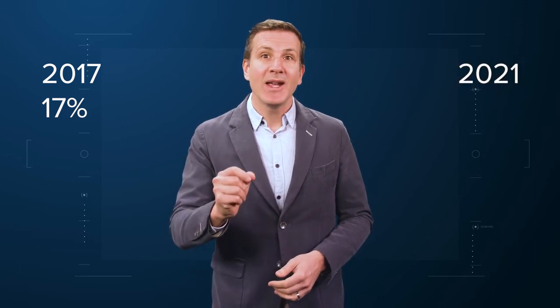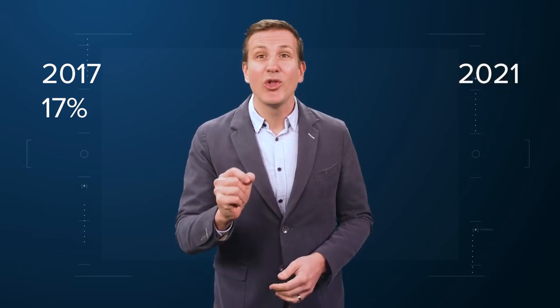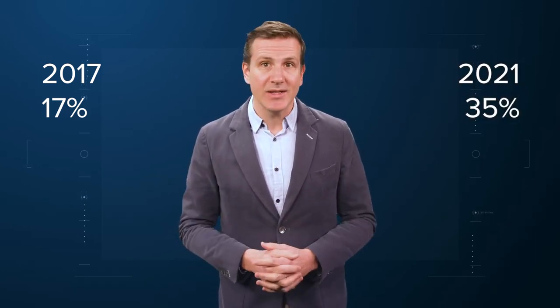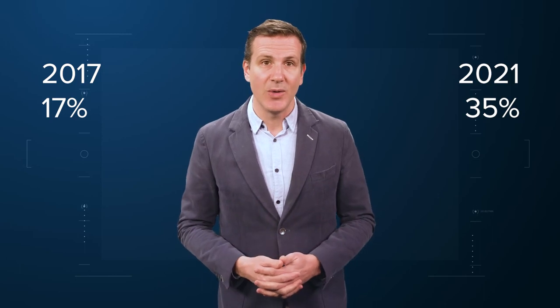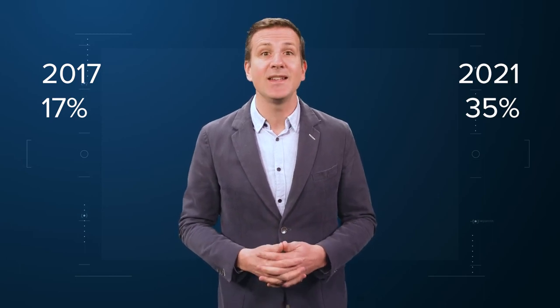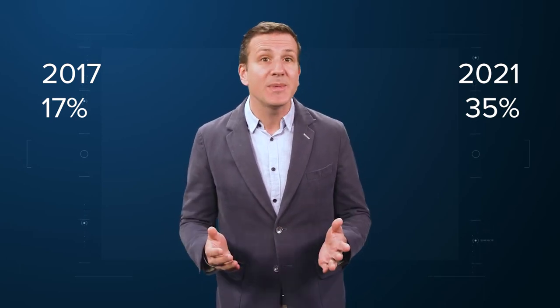Excess deaths are also a concerning percentage of total deaths. In 2017, 17% of total deaths in the U.S. could be considered excess. In 2021, that number had doubled to 35%. Nearly 900,000 individuals in the U.S. died in 2021 that perhaps didn't need to.